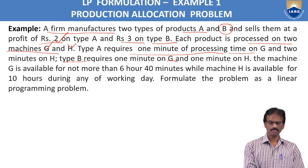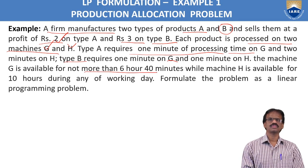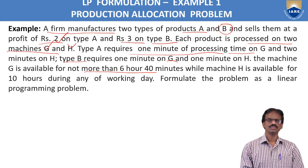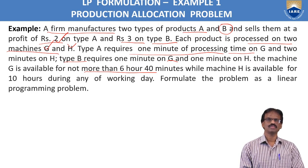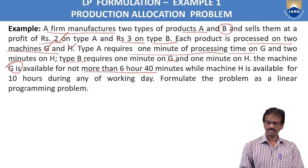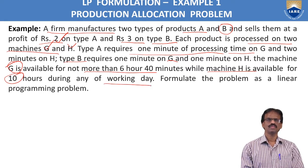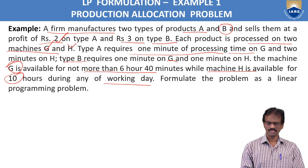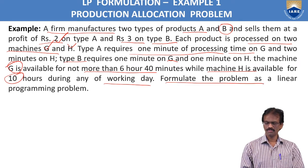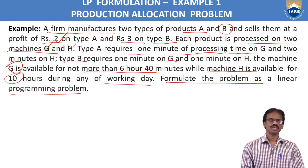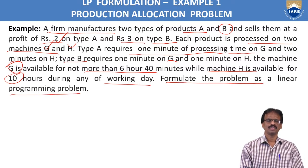Machine G is available for not more than 6 hours 40 minutes — that is 6 × 60 = 360 plus 40, so 400 minutes available time on machine G. Similarly, machine H is available for 10 hours — that is 10 × 60 = 600 minutes available on a particular day. We have to formulate this problem as a linear programming problem and convert it into linear equations.